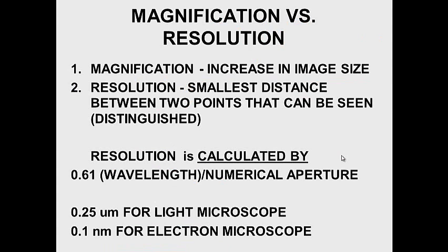What's the difference between magnification and resolution? Magnification is simply the increase in image size, but increasing size alone leads to empty magnification - you gain nothing. Resolution is the important part of microscopy: it's the smallest distance that can be distinguished between two points. For example, looking down a straight railroad track, the two rails appear to converge and become one - you're losing resolution, you can no longer distinguish between the two rails.